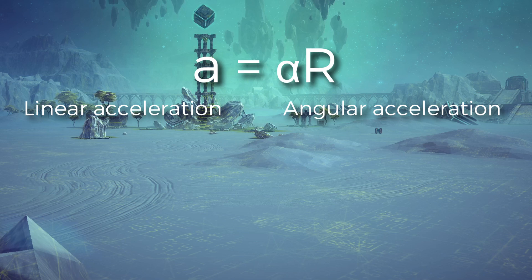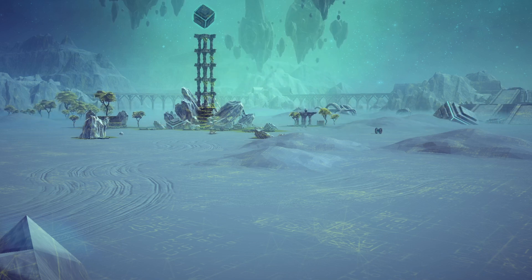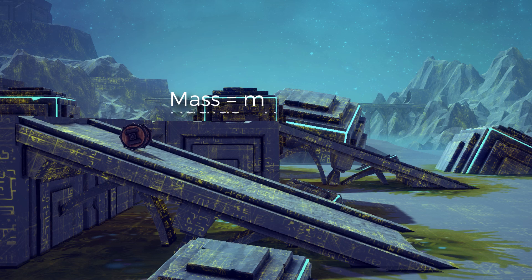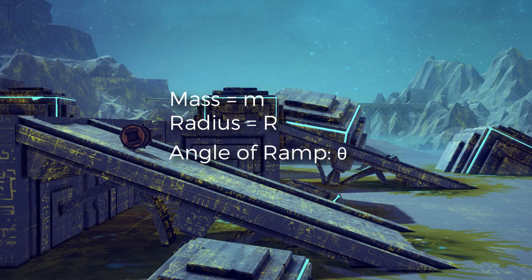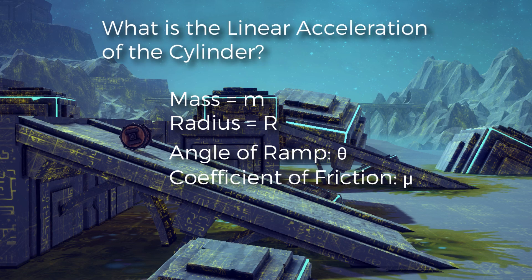Now let's explore a problem which involves this concept. Let's say that a cylinder with mass m and radius r rolls down the ramp without slipping. The angle of the ramp is theta, and the coefficient of friction is mu. The question is, what is the linear acceleration of the cylinder? You can try to pause the video and try for yourself.